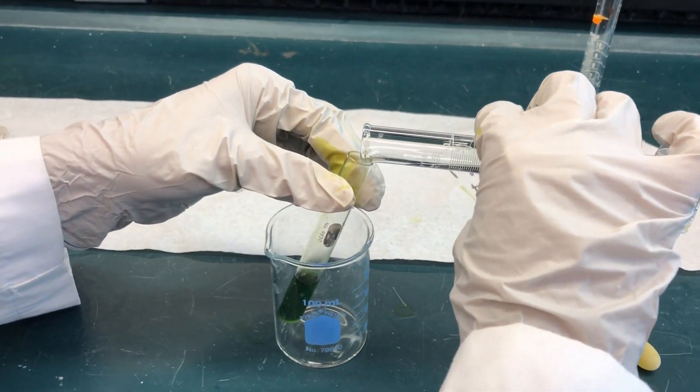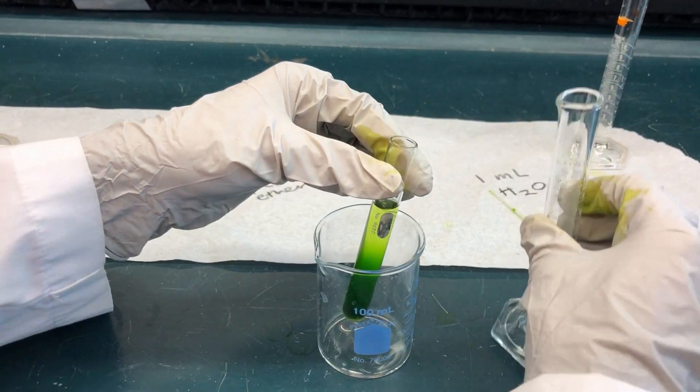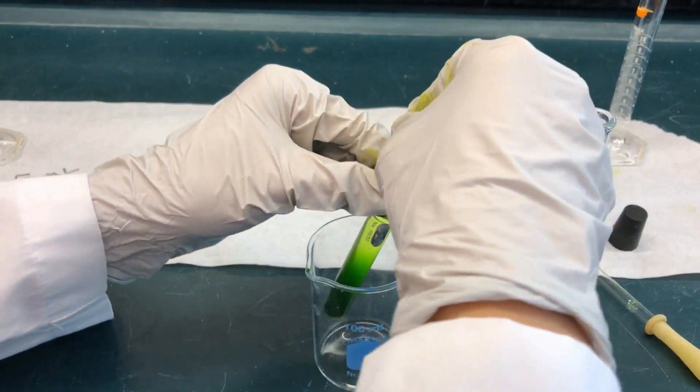Add 4 milliliters of petroleum ether to the new test tube. Stopper and shake for a minute.